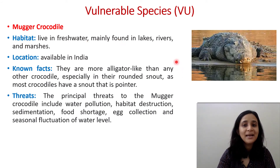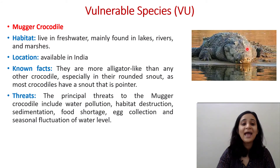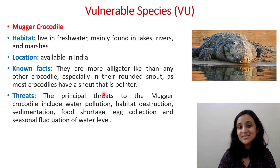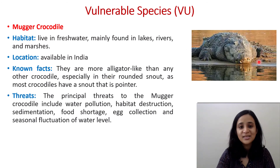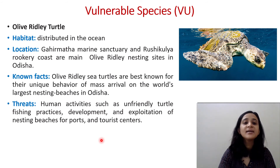Next is the Mugger Crocodile, also under Vulnerable. It lives in freshwater — mainly lakes, rivers, and marshes — located in India. They are more alligator-like than other crocodiles, especially in the rounded snout. Generally crocodiles have a pointed snout whereas alligators have a rounded snout; the mugger's rounded snout makes it more alligator-like. Threats include water pollution, habitat destruction, sedimentation, food shortage, egg collection, and seasonal fluctuation of water level.